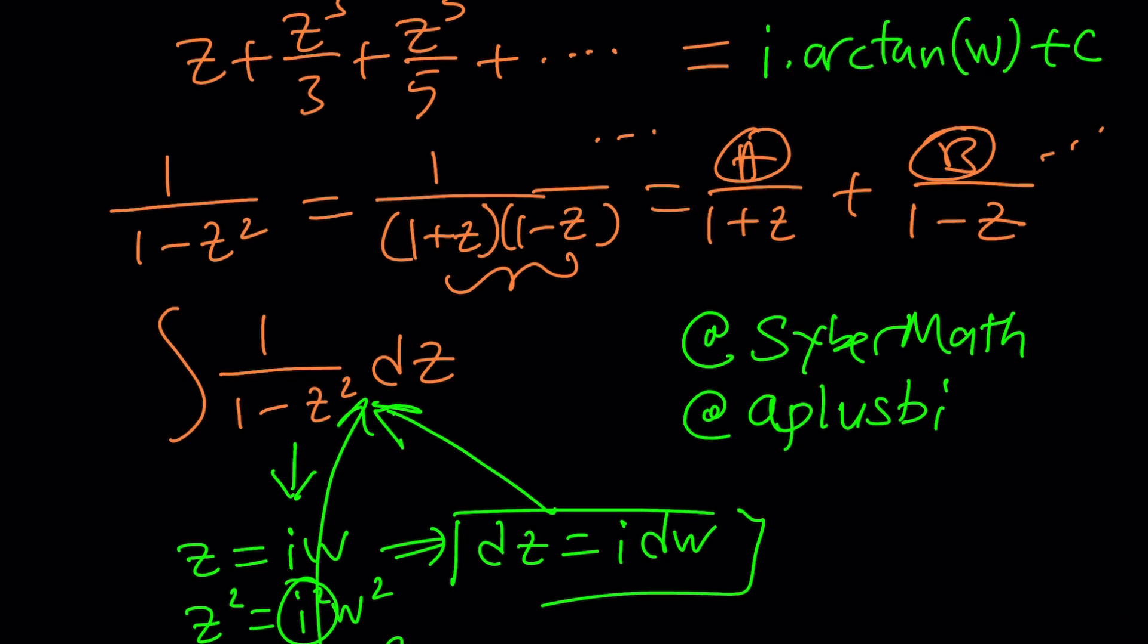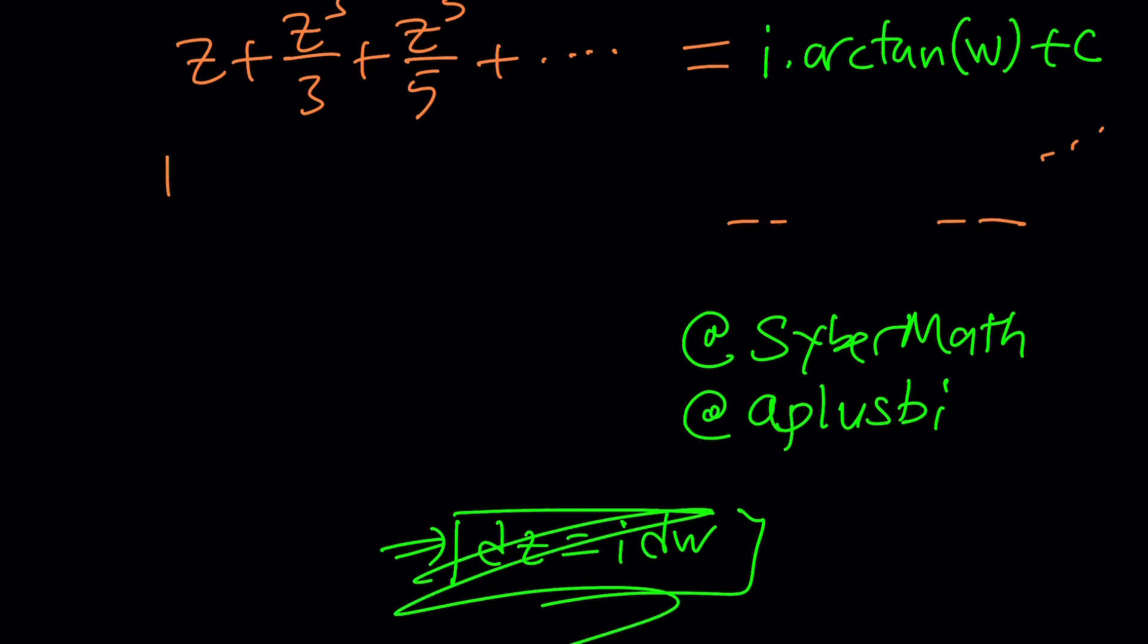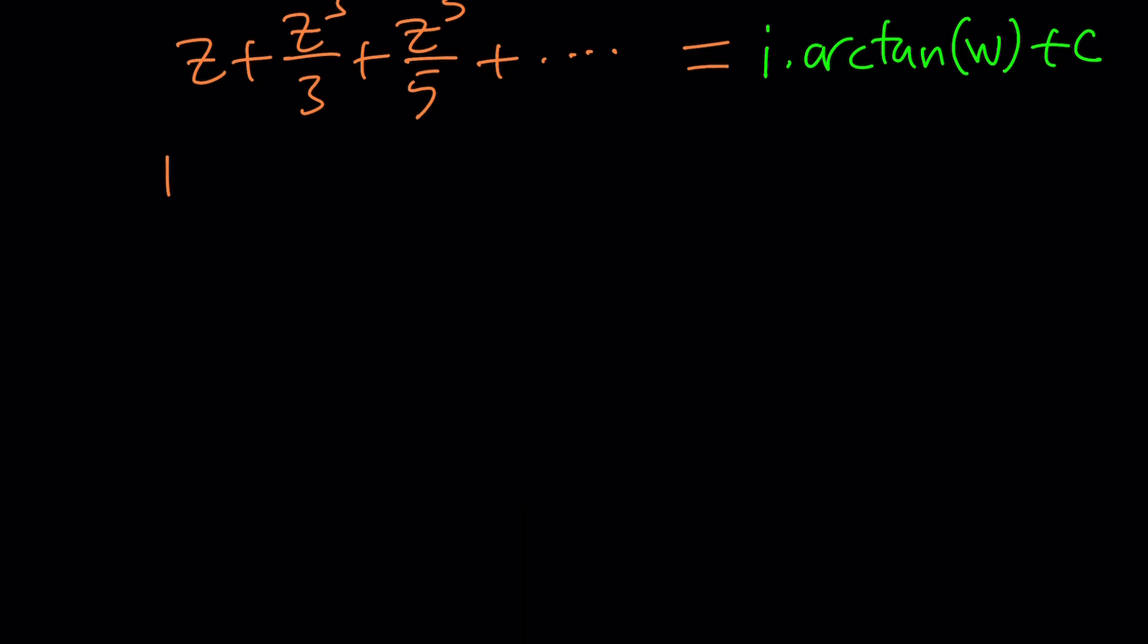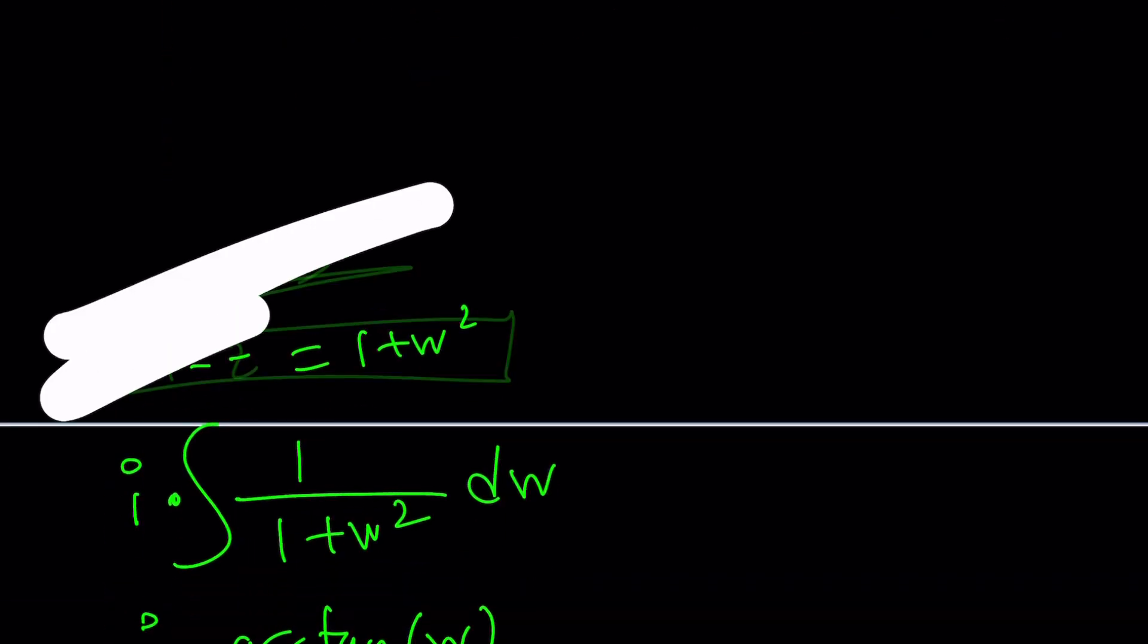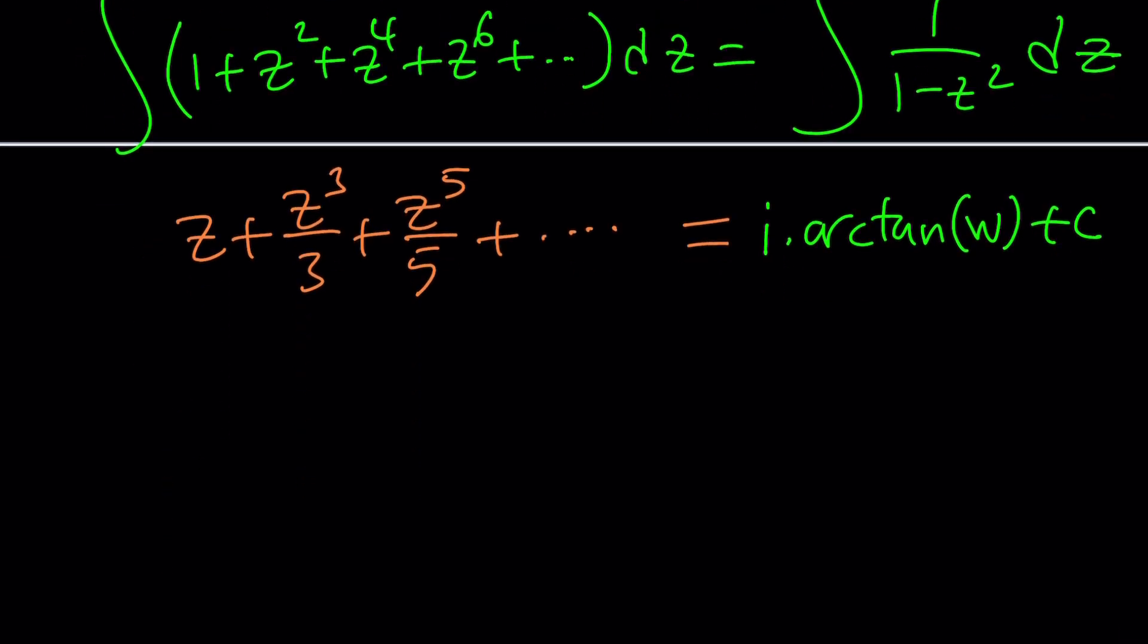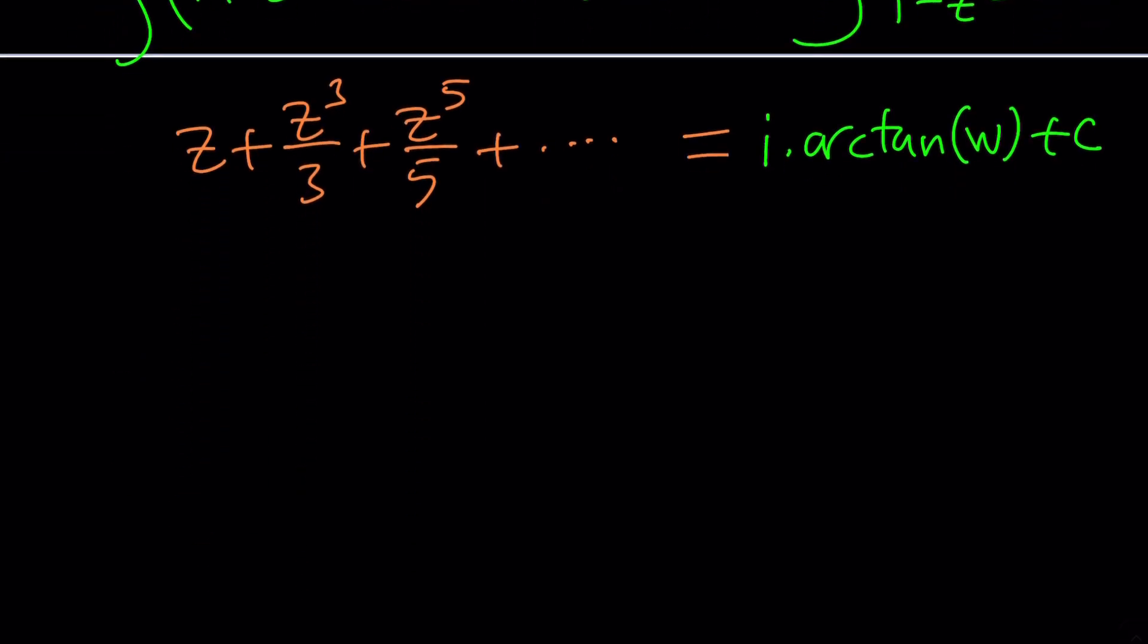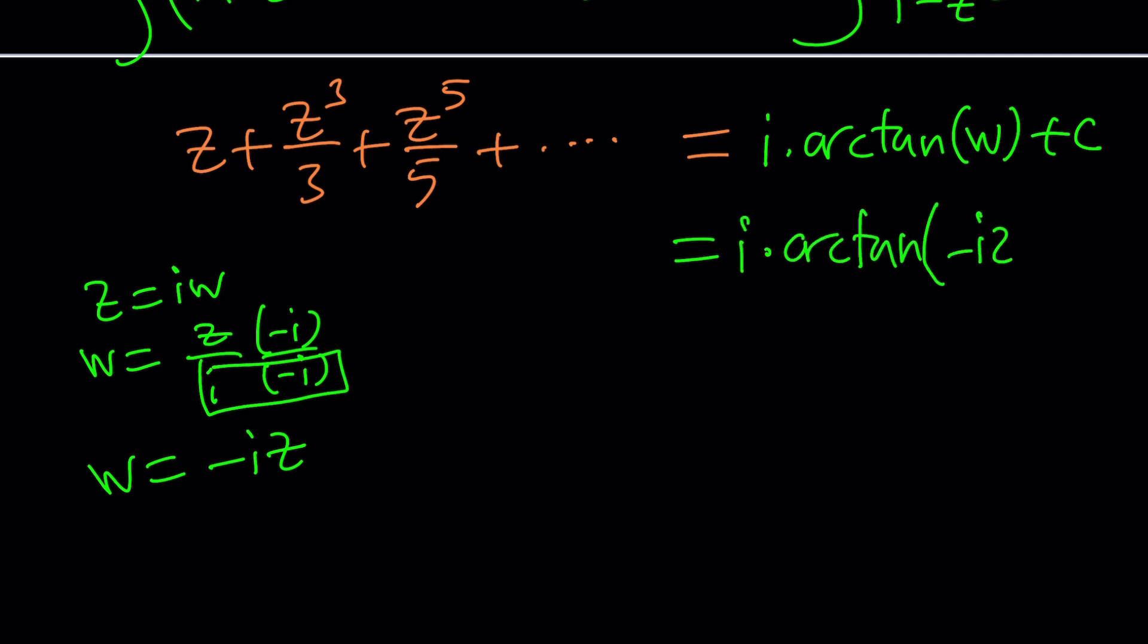I'm going to erase this to use this space to complete my work. Now we're going to back substitute. What is w? z is iw, so w is z divided by i, but multiply by negative i and you get negative iz. So w is negative iz. This becomes i times arctangent of negative iz plus c.